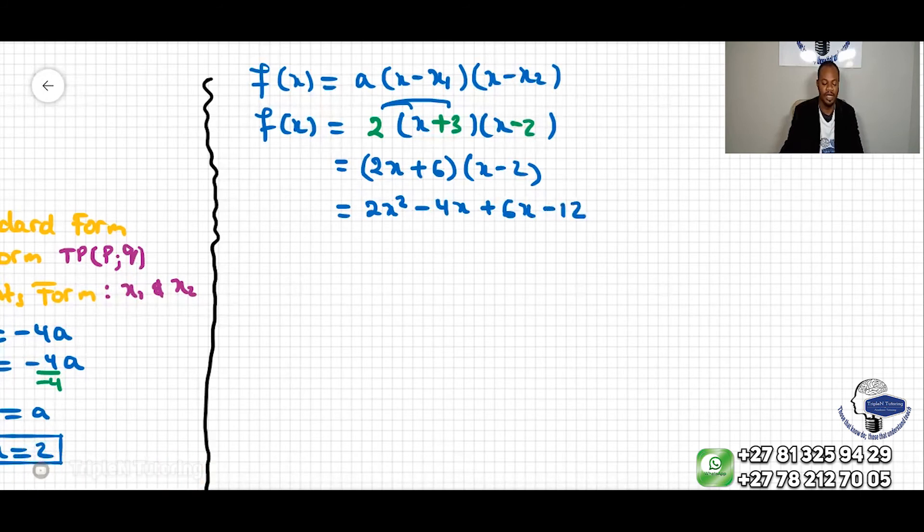Do we have like terms? 2x² is 2x², and then -4x and +6x, these two can be combined, that makes -4x + 6x = +2x, and then -12. So f(x) = 2x² + 2x - 12.